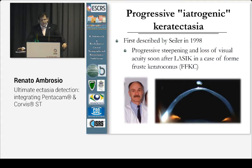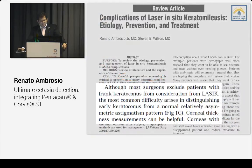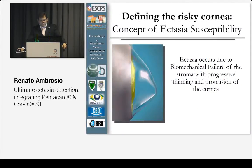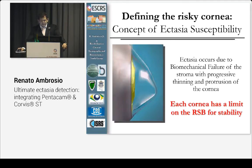Ectasia was described in a LASIK case that had forme fruste disease prior to surgery. It's one of the major complications after LASIK, and we have to understand how to prevent it. Careful screening has always been critical. We have to exclude patients at risk with early keratoconus, and also understand how you can make the cornea weaker but still stable. If you go beyond a certain limit — which will vary from patient to patient — you may have ectasia. Ectasia susceptibility is fundamental, and each cornea would have a residual stromal bed and a percentage of tissue that you can alter and still remain stable.